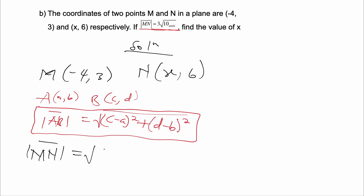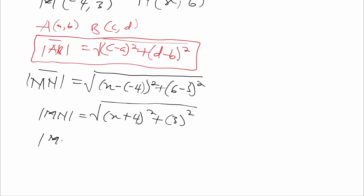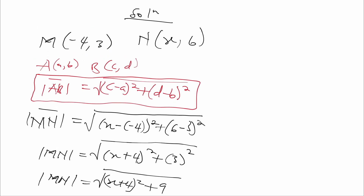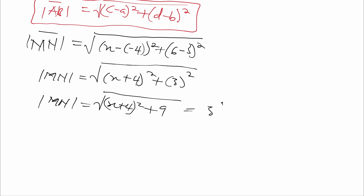Taking this into consideration, MN will be equal to the square root of (x minus negative 4) all squared plus (6 minus 3) all squared. So MN will be equal to the square root of (x plus 4) all squared plus 3 squared. MN will be equal to the square root of (x plus 4) all squared plus 9. And we know that MN is equal to 3 root 10 units, so all this is equal to 3 root 10.